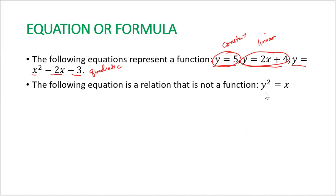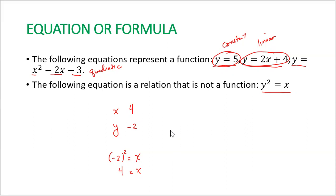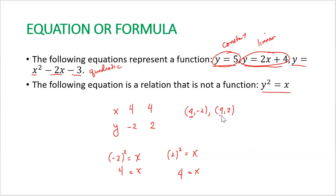However, the equation y squared equals x is just a relation, not a function. If y equals negative 2, then substituting gives (-2)² equals x, so x equals 4, yielding the ordered pair (4, -2). If y equals positive 2, we also get x equals 4, giving the ordered pair (4, 2). Since these two ordered pairs have the same x-coordinate, this equation is just a relation.